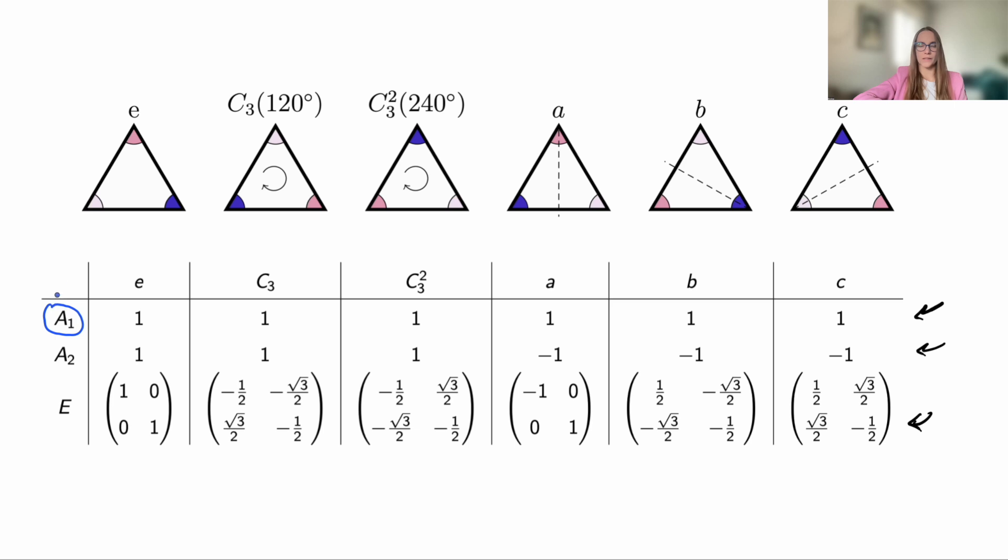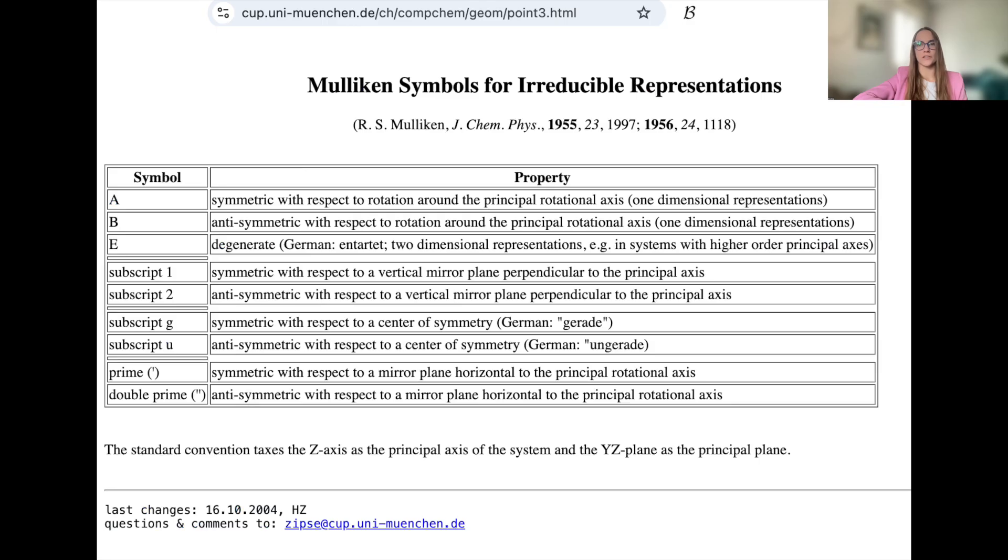The first way is usually called invariant. The second type, which behaves like cosine here, can sometimes be called a pseudoscalar representation in slang, and you might also meet labels like A1, A2, and E for these types of representations. These are Mulliken symbols.